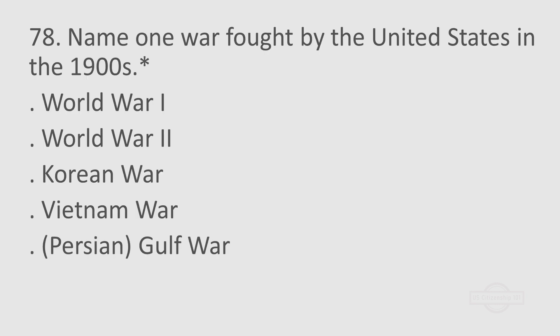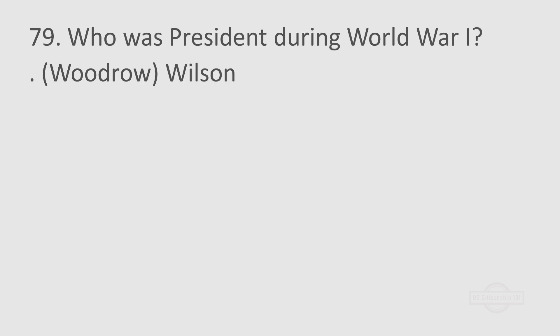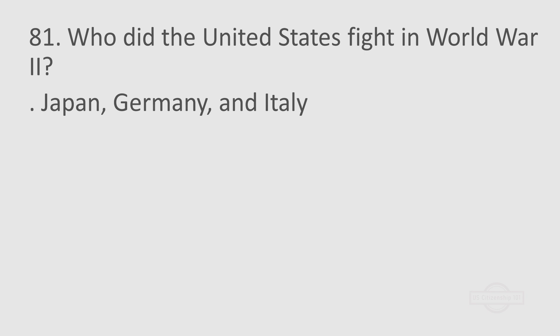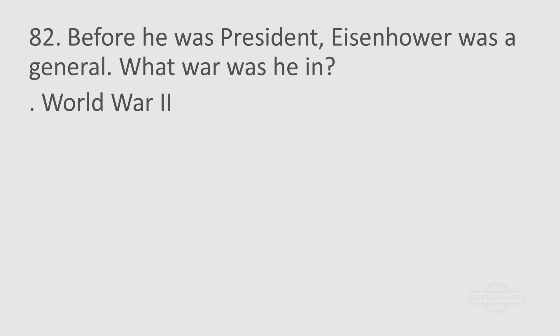Question 78: Name one war fought by the United States in the 1900s. World War I. World War II. Korean War. Vietnam War. Persian Gulf War. Question 79: Who was president during World War I? Woodrow Wilson. Question 80: Who was president during the Great Depression and World War II? Franklin Roosevelt. Question 81: Who did the United States fight in World War II? Japan, Germany, and Italy. Question 82: Before he was president, Eisenhower was a general. What war was he in? World War II.